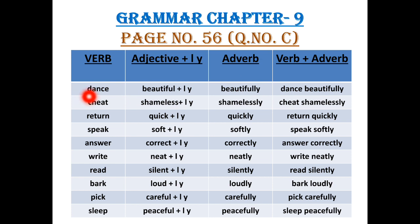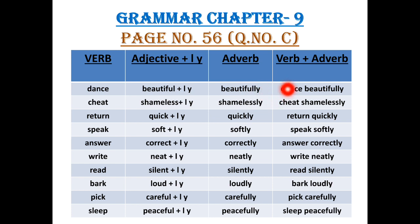The first word is dance. A verb is given — dance. And in the second column, you can see beautiful, which is an adjective. And when we will add L-Y to the word beautiful, it will become beautifully, which is an adverb. Now when we will add verb with adverb, it will become dance beautifully.